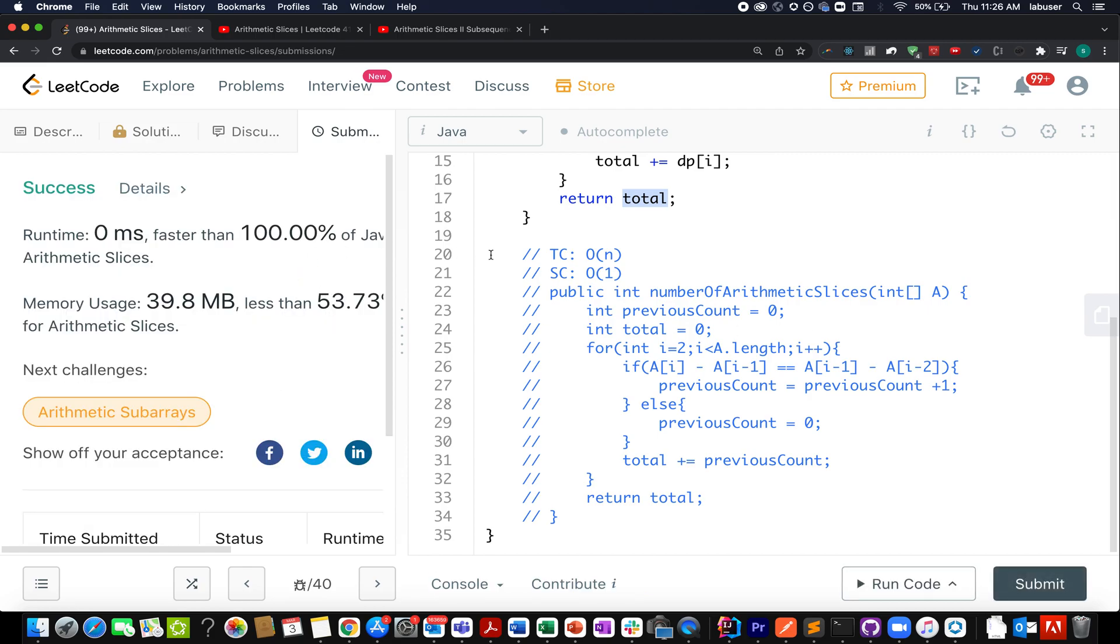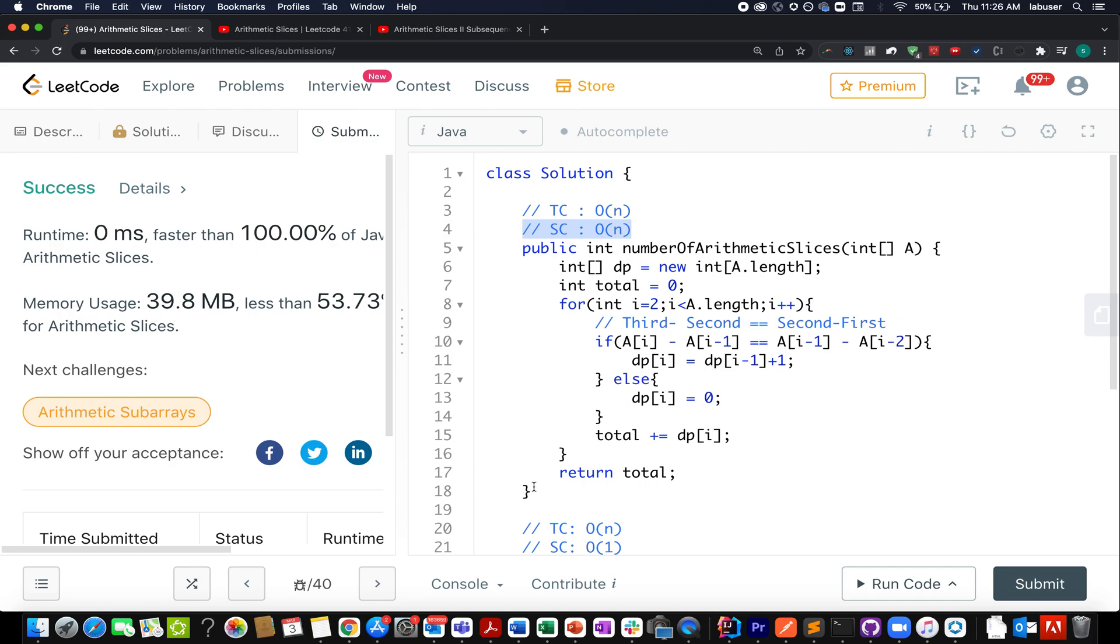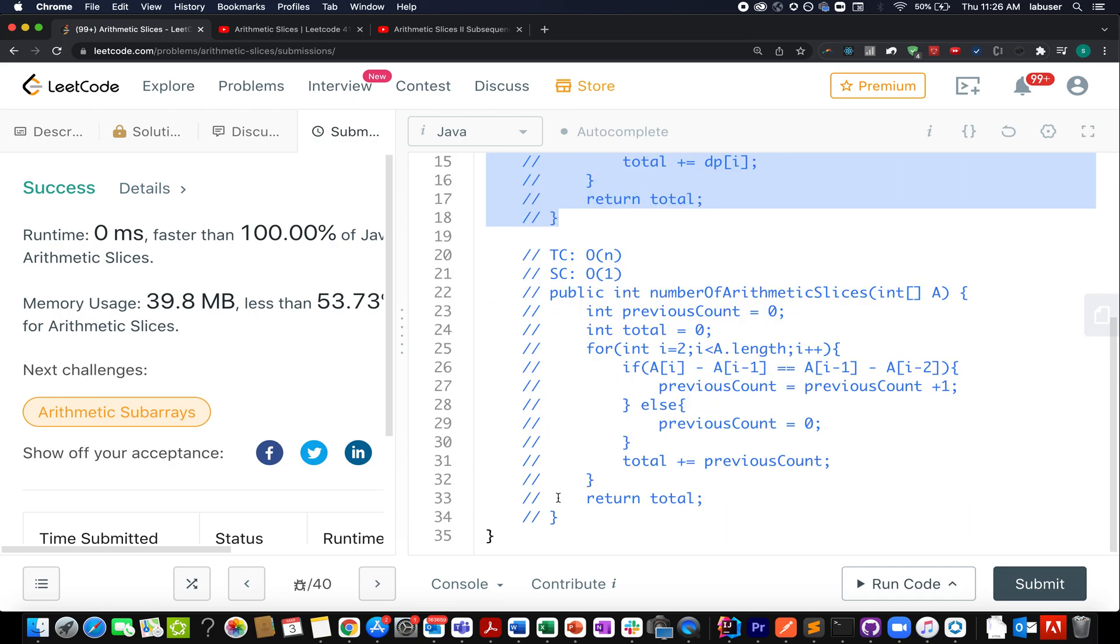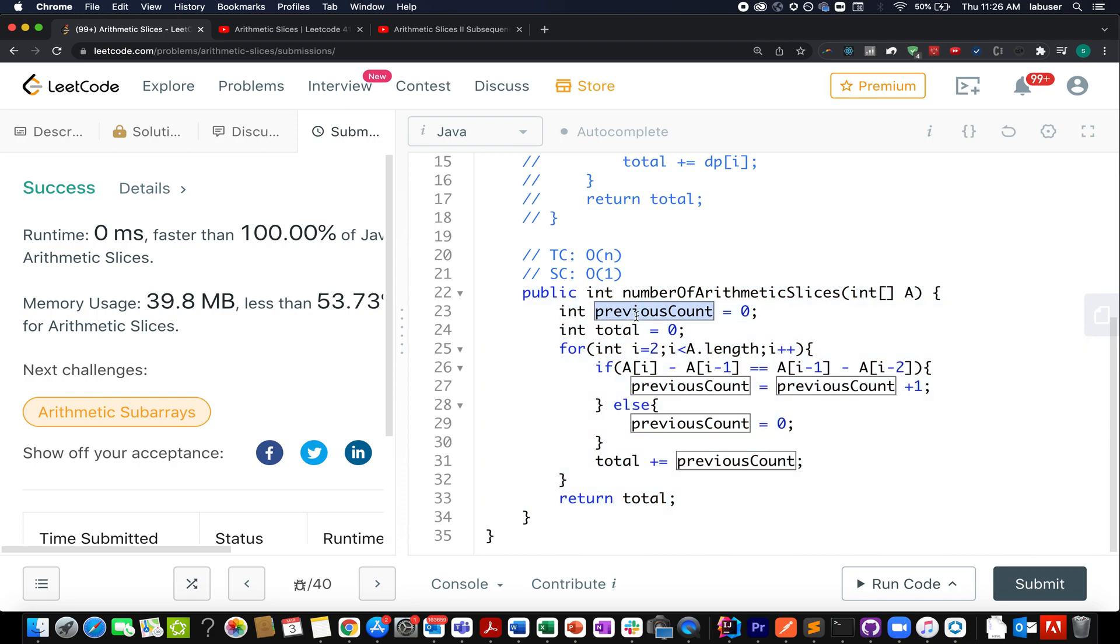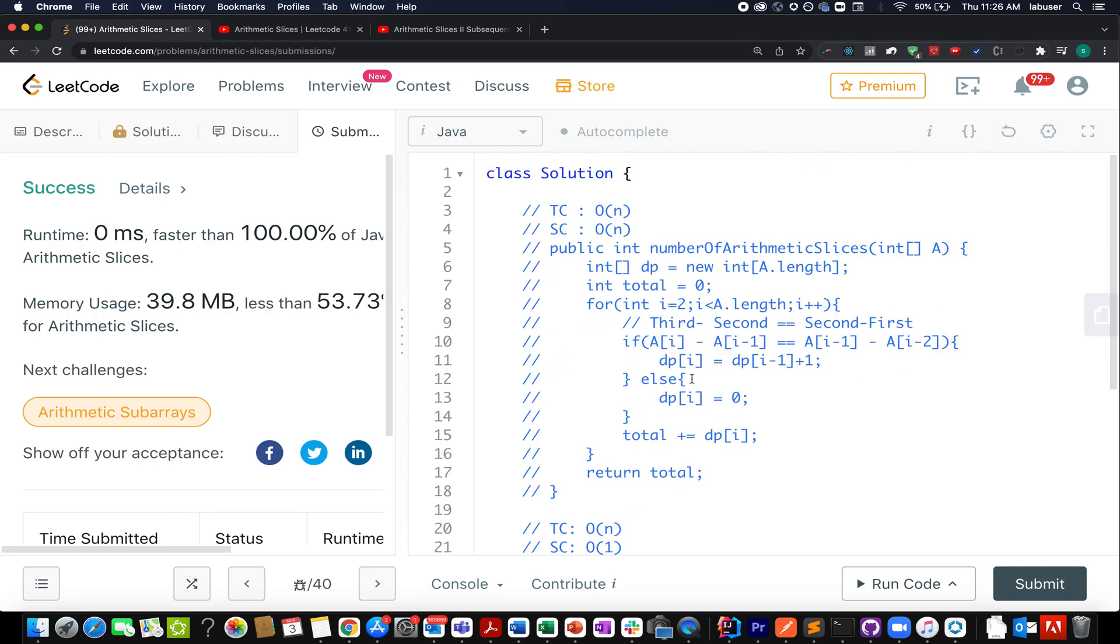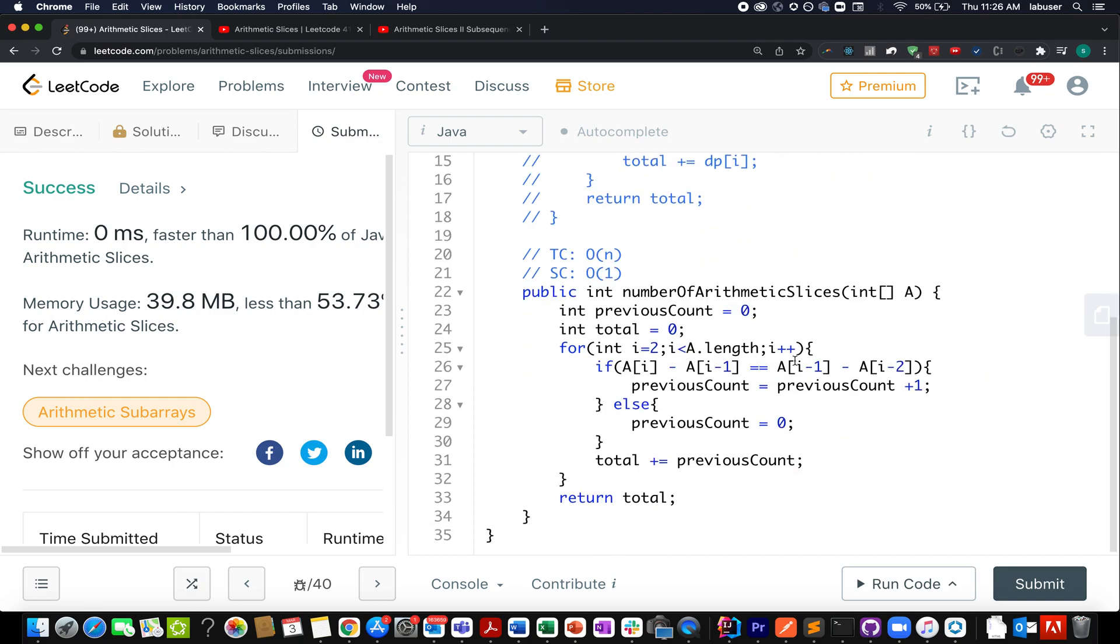Now comes the question: can we improve the space complexity? The answer is yes. I have coded it up here. I have taken a previous count variable and a total variable. Previous count is responsible for storing the value at the previous index. We actually don't need the entire DP array, we're just interested in keeping track of the previously computed answer. I have replaced with previous count plus 1 whenever there is a matching case. In case it's a negative case, I reset previous count to zero. The complete algorithm remains the same. Let's try this too. Accepted! Pretty awesome.